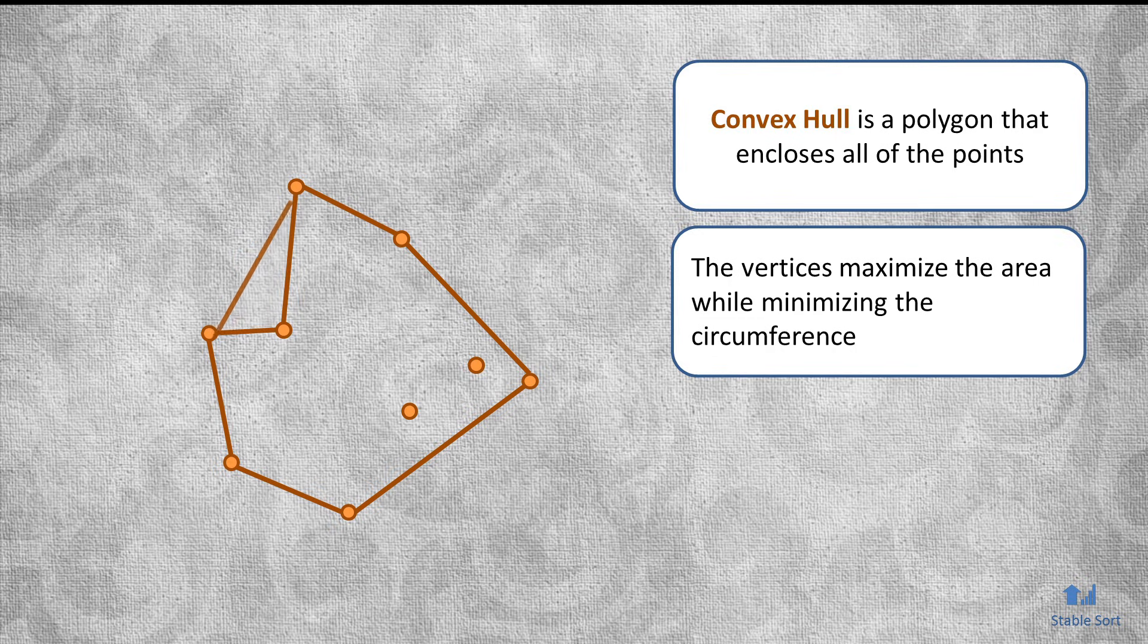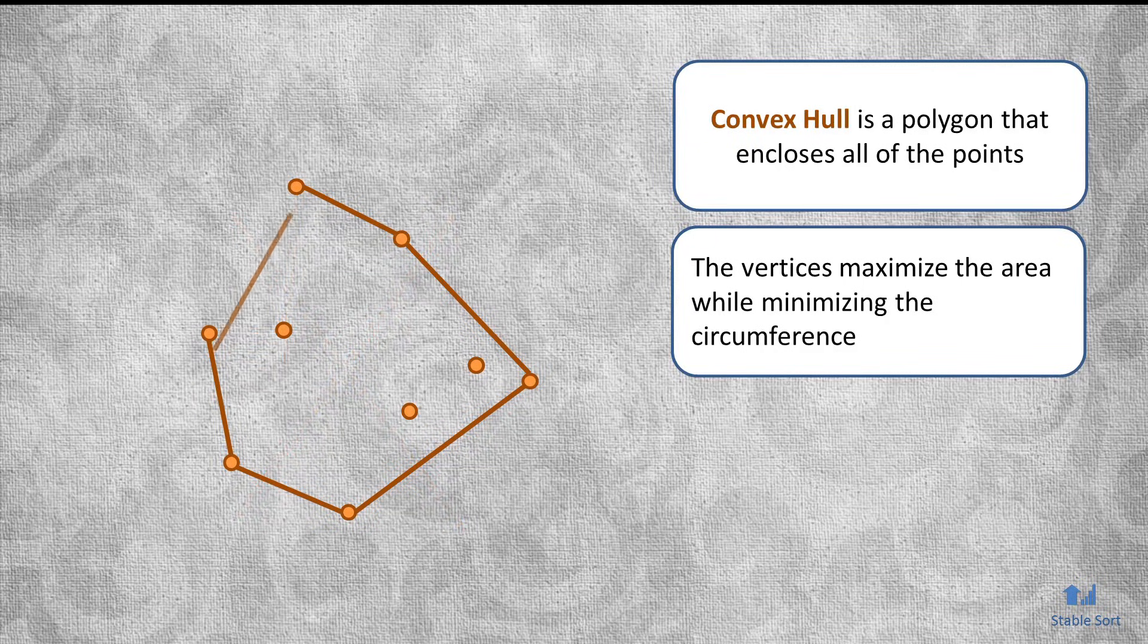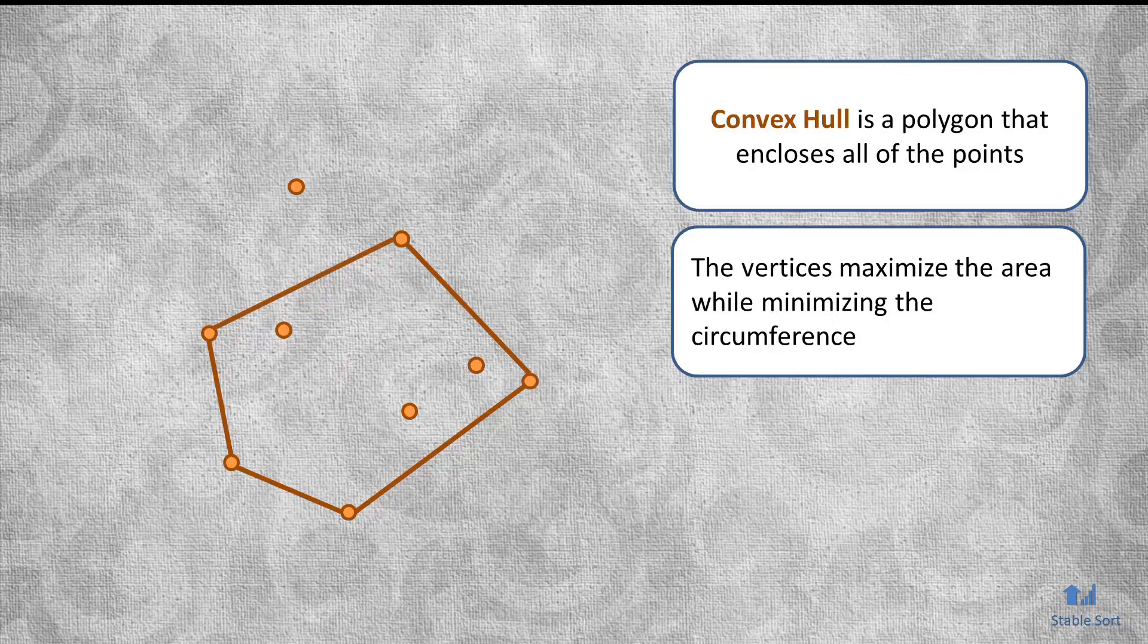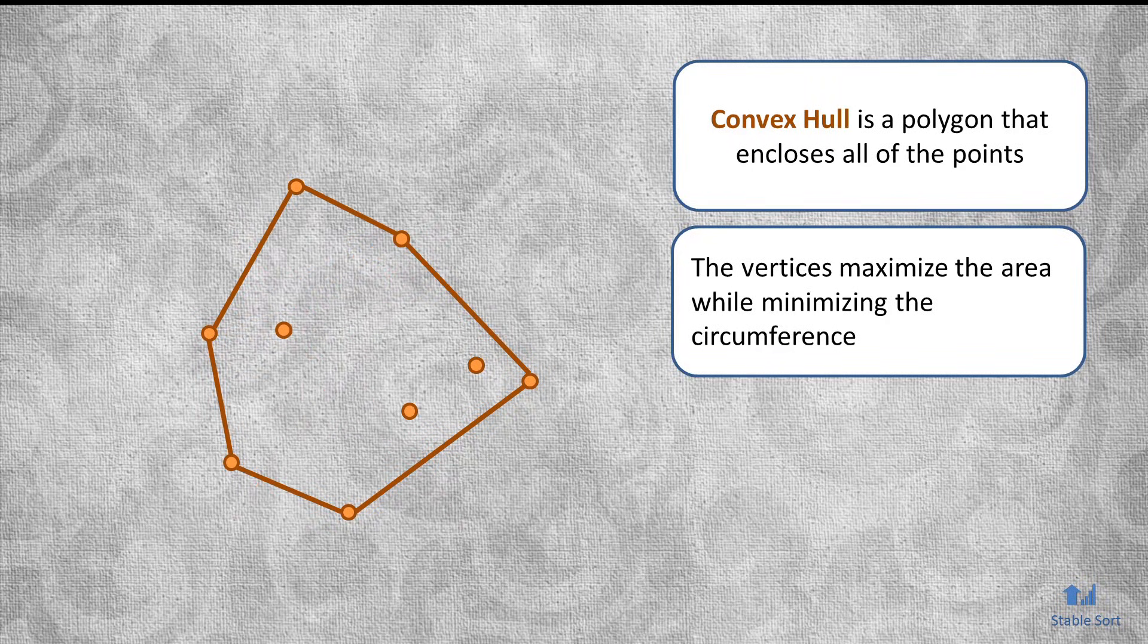Note that if some additional points were to be included, then the covering area is reduced while the circumference is increased. Likewise, if some of the vertices of the convex hull are omitted, then the resulting polygon won't cover all of the points in the set.